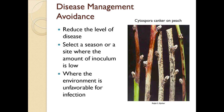For disease management, think about avoidance - you want to reduce the level of disease by selecting a season or site with a low amount of inoculum, and acting when the environment is unfavorable for infection. Here we have cytospora canker on peach, and it's recommended to do summer pruning on peach because you get extended dry periods. If you have water present and this disease, you'll just spread it from one tree to another.